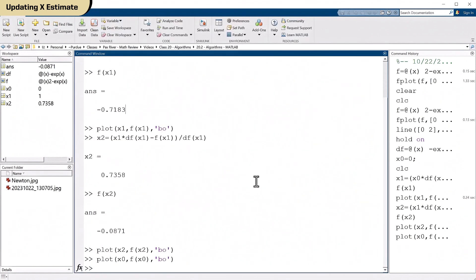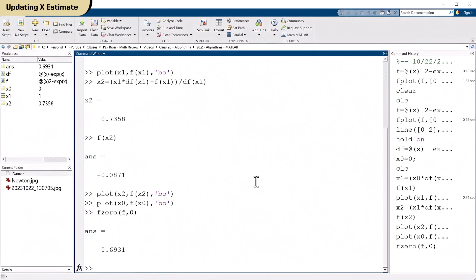By the way, what is the right answer? We have everything we need to know. So the right answer is 0.6931. Okay. That's coming from the fzero command. We've got x0, x1, x2, or increasingly accurate estimates.